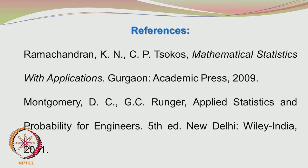The references for this topic are the books written by Ramachandran and Sokos — Mathematical Statistics with Applications from Academic Press — and the prescribed textbook by Montgomery and Runger, Applied Statistics and Probability for Engineers, 5th edition from Wiley India.